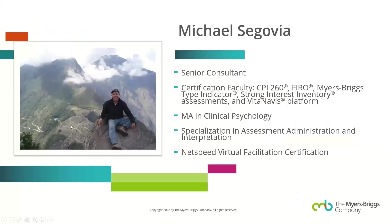A little bit more about who I am: my name is Michael Segovia, I am a senior consultant with the Myers-Briggs Company, celebrating my 33rd anniversary this coming May. I am certification faculty for the assessments we provide certification on. My background is in clinical psychology with a specialization in assessment administration and interpretation, and I took a certification program on how to deliver programs virtually about four years ago — which has been very relevant given the pandemic.